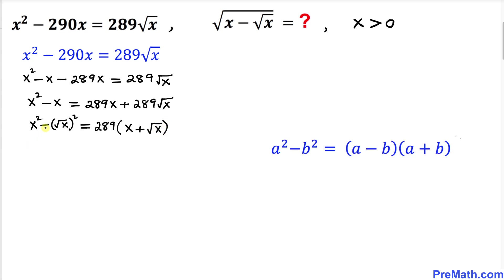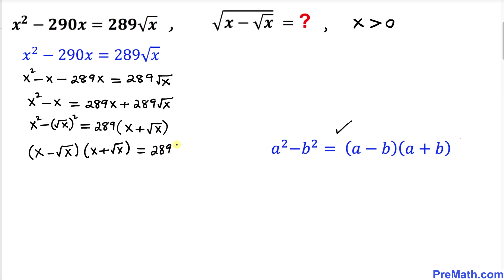Now the left hand side represents the difference of two squares. So we apply the identity a squared minus b squared equals to a minus b times a plus b. Therefore the left hand side becomes x minus square root of x times x plus square root of x, equals to 289 times x plus square root of x on the right hand side.